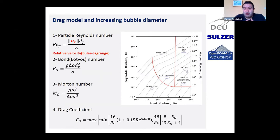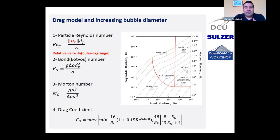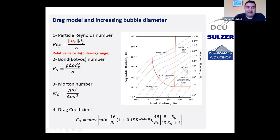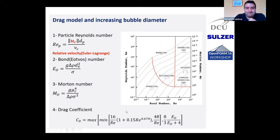We had to modify the drag coefficient for bubbles. As shown in the figure, there is a wide range of bubble shapes — spherical bubbles on the left and spherical caps at the top. We use three non-dimensional numbers: particle Reynolds number, Eötvös number, and Morton number. Based on these and from the literature, we selected a drag coefficient that covers the wide range from spherical to spherical cap, and this is the modified drag coefficient we are now using.